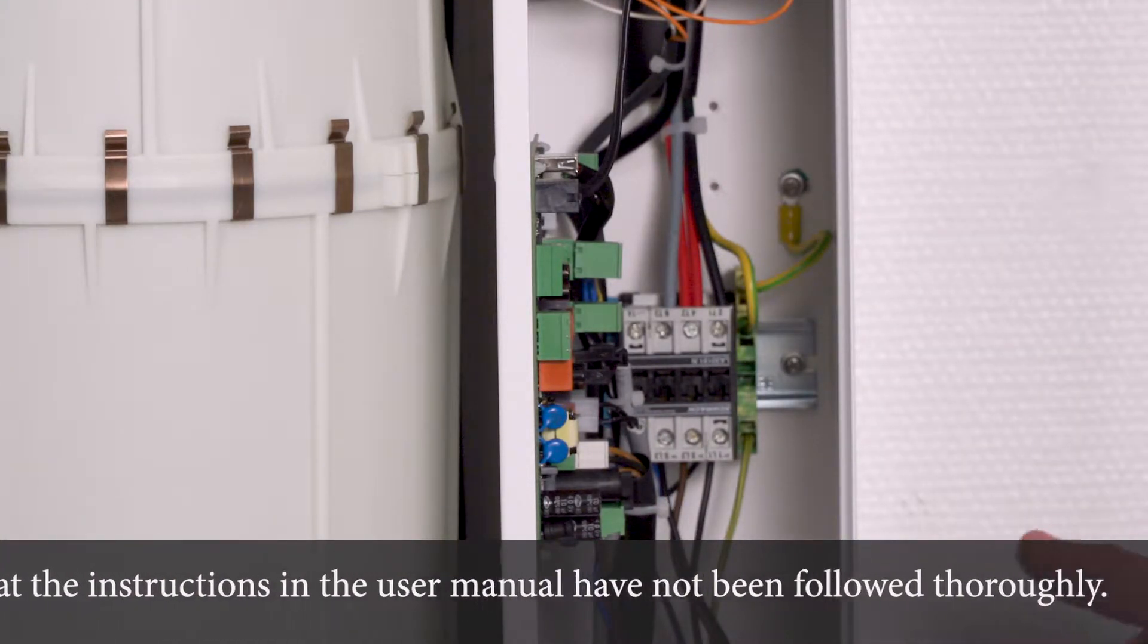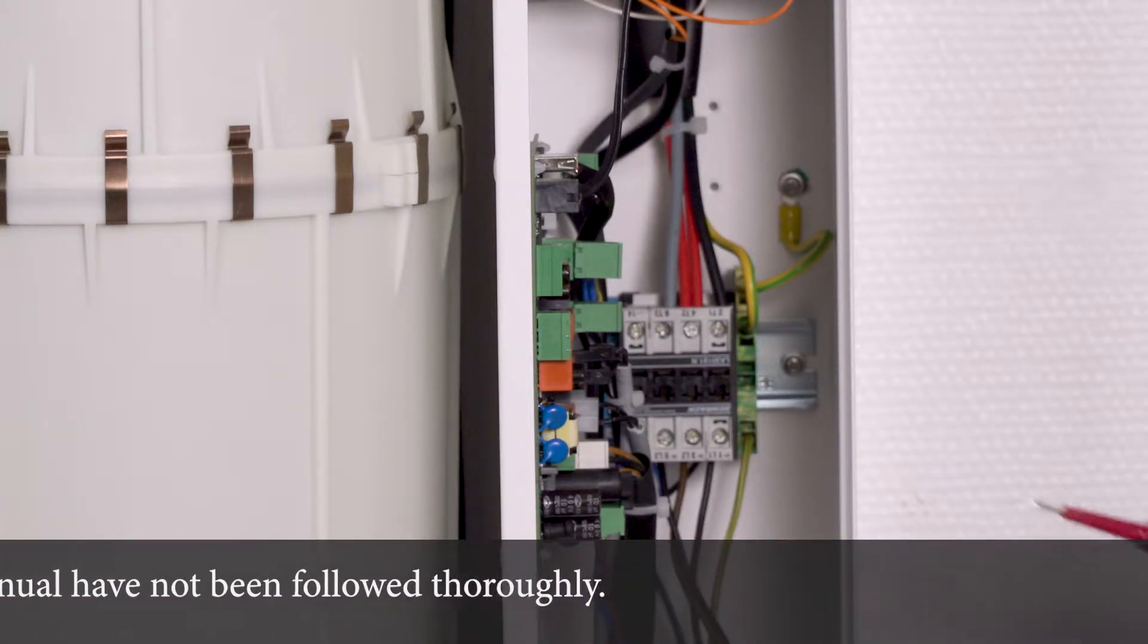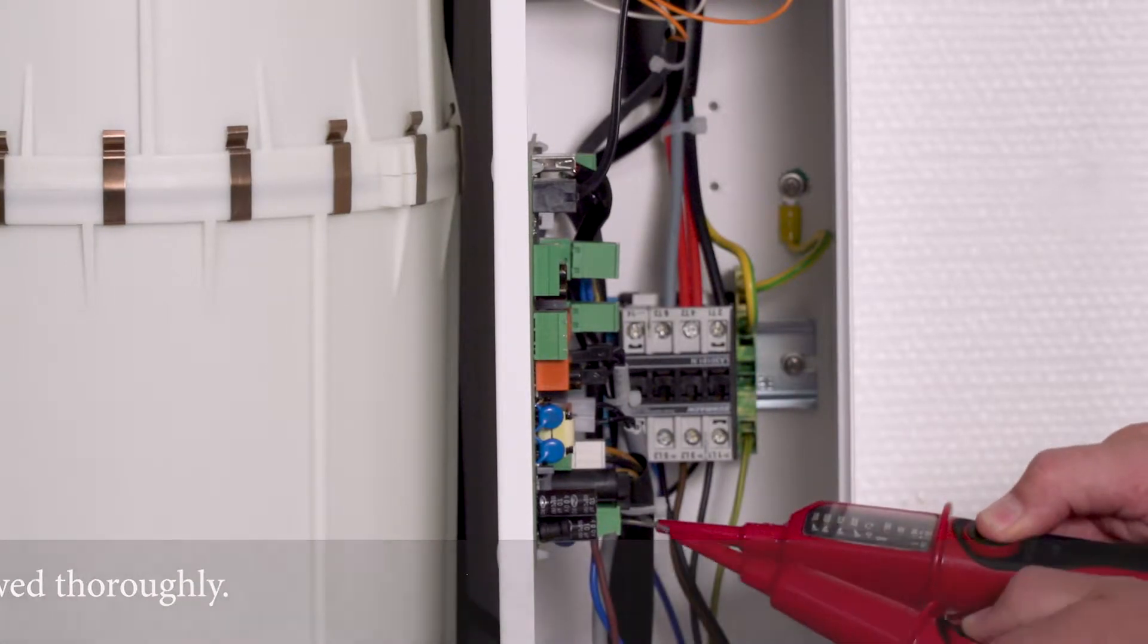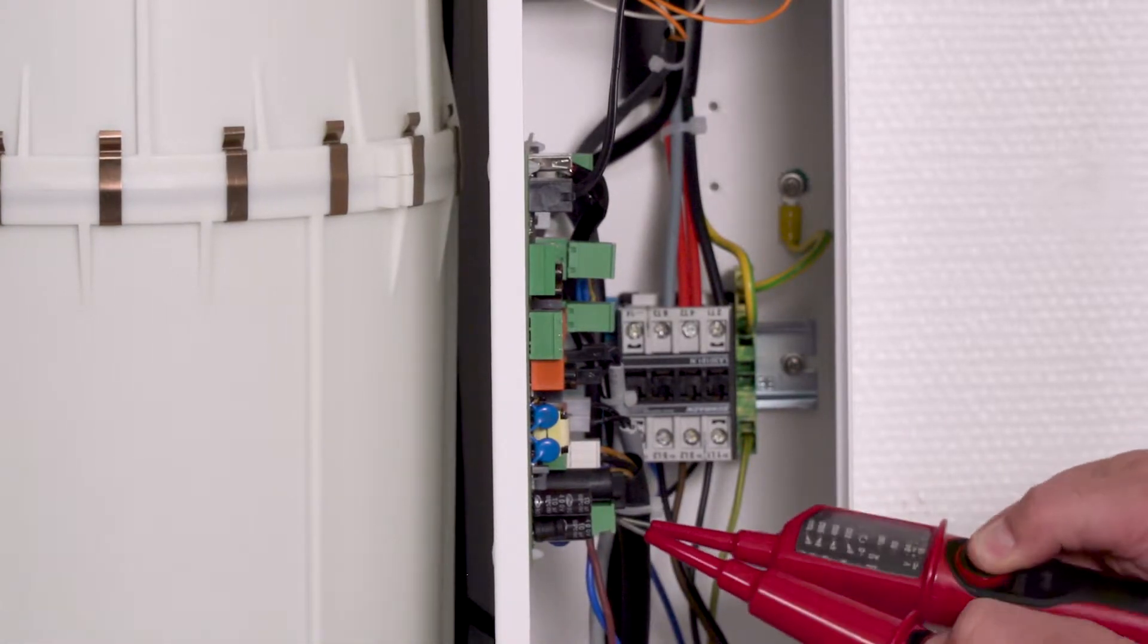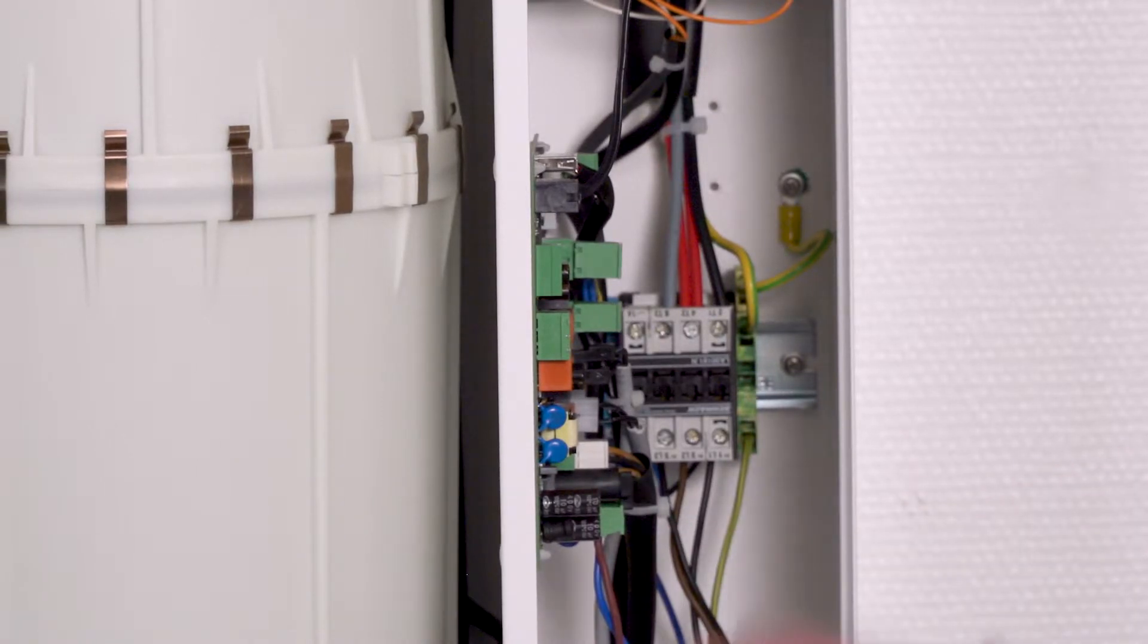If your unit is equipped with a separate control voltage for the main board, as in this case, it is absolutely necessary to check that for voltage. There is no voltage here either. I can start maintenance safely.